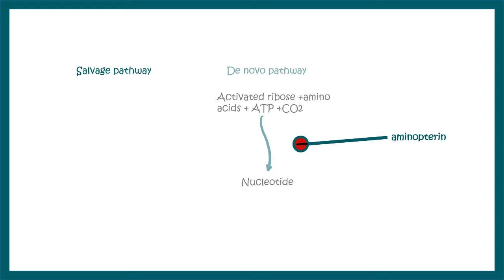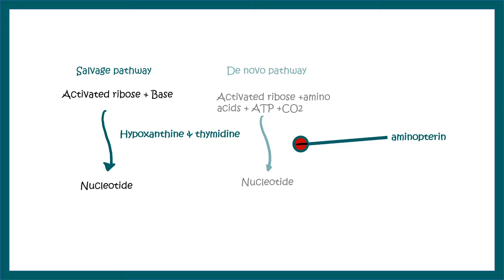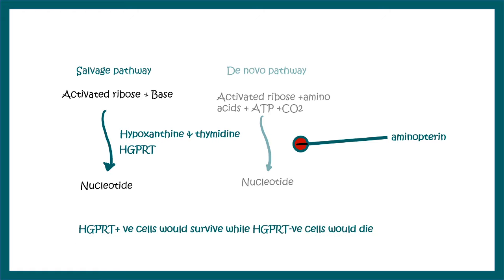In the absence of the de novo pathway, the salvage pathway is the only way of generating nucleotides. In the salvage pathway, activated ribose, bases, etc., are used to generate nucleotides — it is a way by which broken-down nucleotides can be recycled. This can be done with the help of hypoxanthine, thymidine, and an enzyme known as HGPRT. This enzyme is present in B cells but absent in myeloma cells. Therefore, HGPRT-positive cells survive because the salvage pathway functions, while HGPRT-negative cells die because they have no way of generating nucleotides.